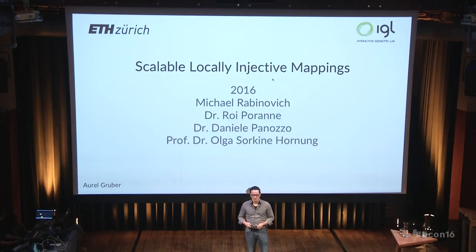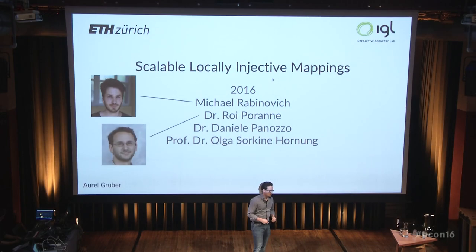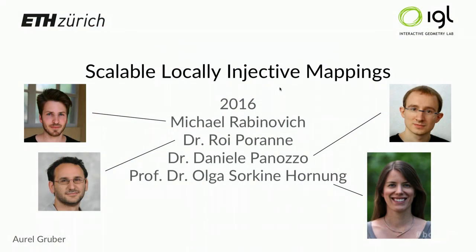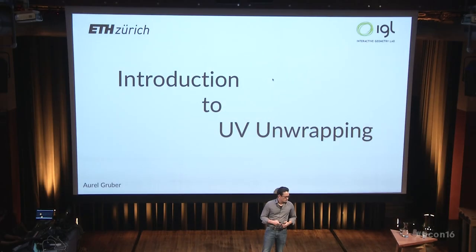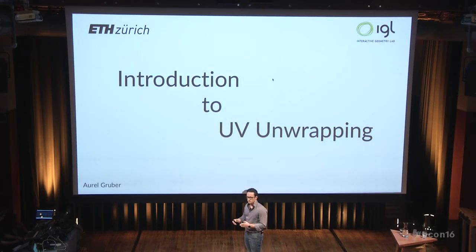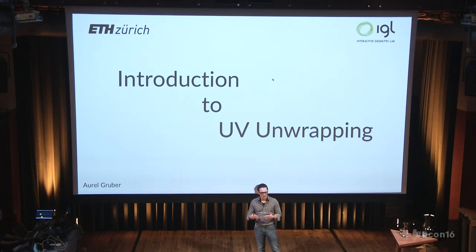The IGL has an impressive record of publications in those fields. Most recently, the paper called Scalable Local Injective Mappings, which is concerned with parametrization and shows a new approach that is perfect for UV unwrapping, among other things. I would like to give you an introduction to UV unwrapping — not how to use it in Blender, but how to think of it in a more formal way, such that it becomes tangible and tractable for algorithms.